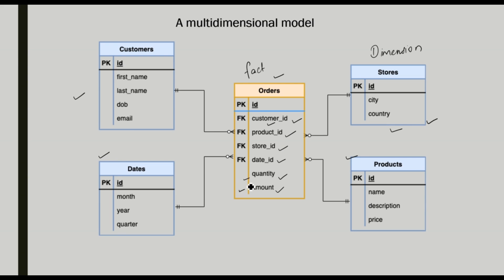Normal values like quantity and amount are stored in the fact table, which is the center of our concept. All surrounding tables are our dimension tables. Together, the fact table and dimension tables form our multi-dimensional model.